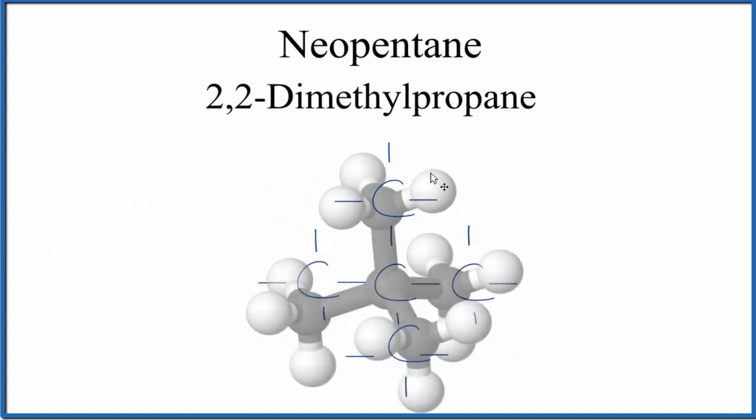The carbons are black and the hydrogens are white. So again, you see that carbon in the center with, in this case, four methyl groups around it, since we can only have five. It's pentane. So that's the structural formula for neopentane.